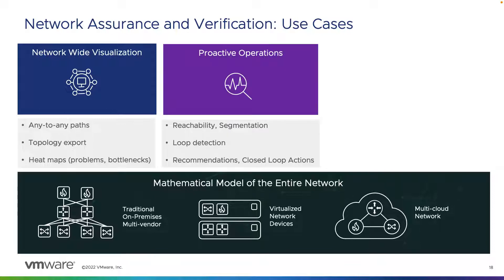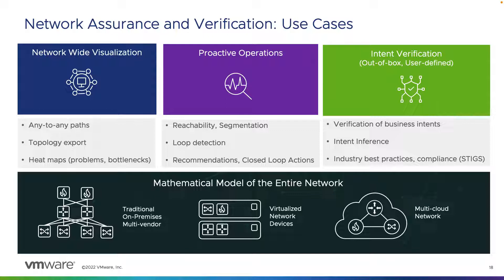We're then going to talk about proactive operations. This is getting into dealing with intents and being able to define intents against your infrastructure, both virtual and physical. This is going to allow us to define intents such as loop detection, recommendations, closed loop actions, and define reachability and segmentation intents against our infrastructure. vRealize Network Insight has out-of-the-box intents that check against the infrastructure, and then you can set user-defined intents to run against specific portions or even across your entire infrastructure.